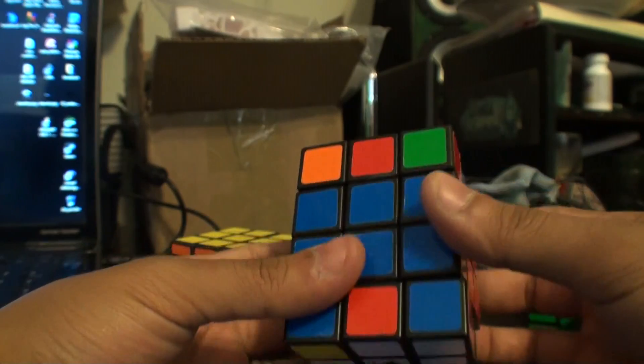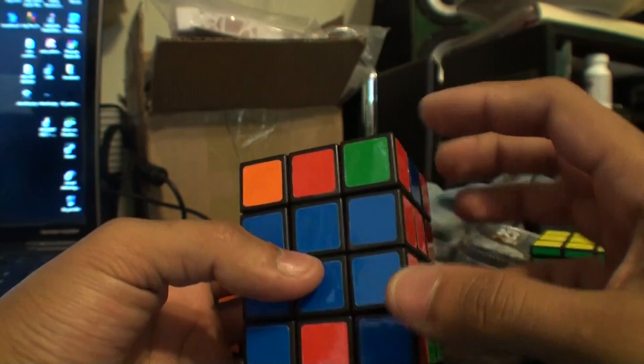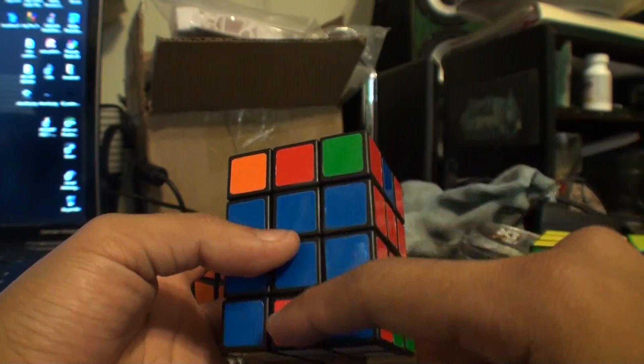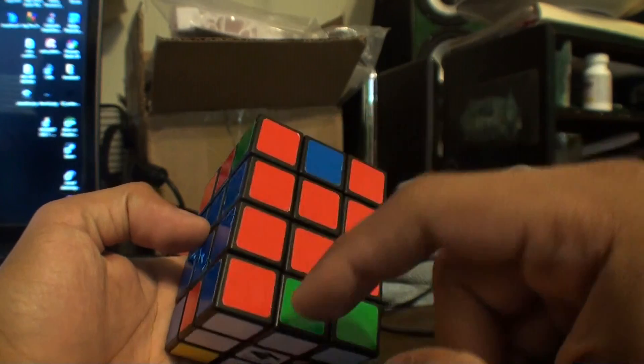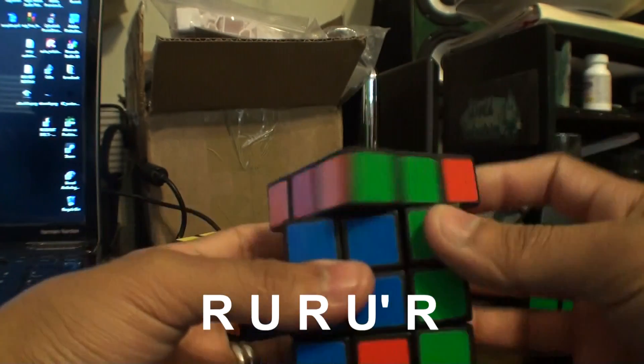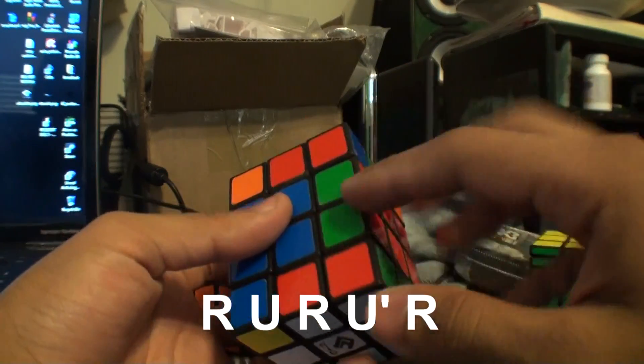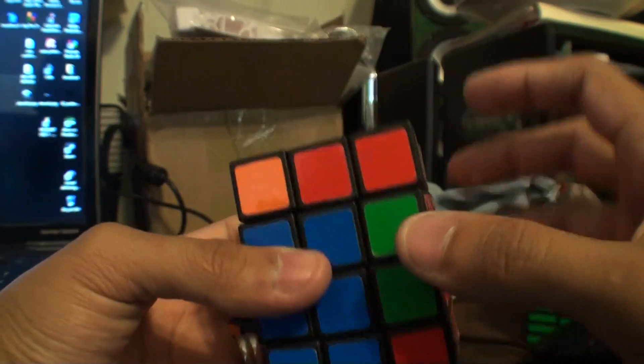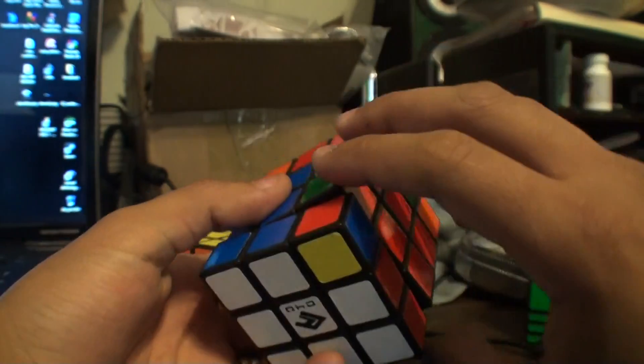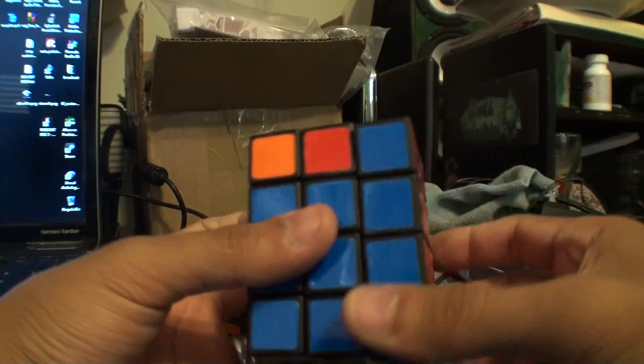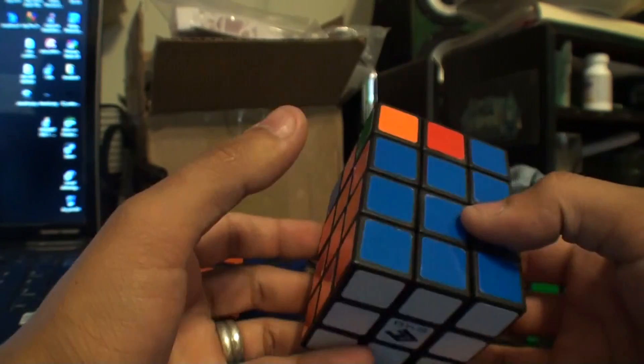So we're going to put it over the layer it needs to go. See, green, red, green, red. We're going to do the algorithm one more time. See, it swapped them. And then you're going to do the algorithm one last time with the last white corner. And that should solve your last bottom layer.